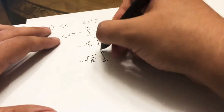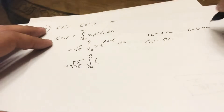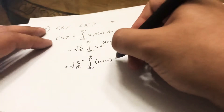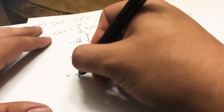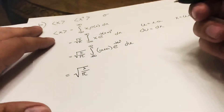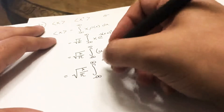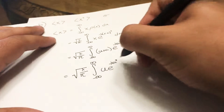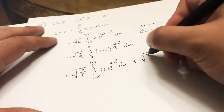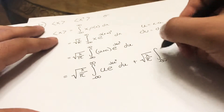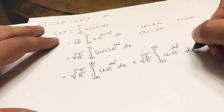Continuing with the integral: A ∫ from -∞ to ∞ of (u + a)·e^(-λu²) du. This splits into two integrals: A ∫ from -∞ to ∞ of u·e^(-λu²) du, plus A ∫ from -∞ to ∞ of a·e^(-λu²) du.